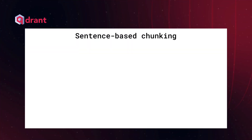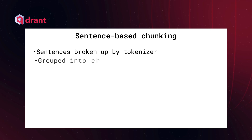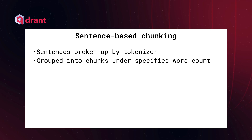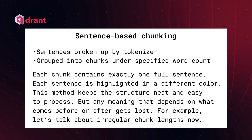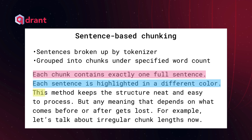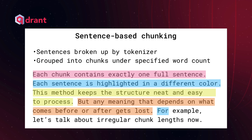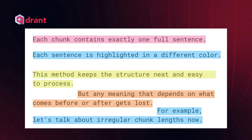Sentence-based chunking breaks the document into sentences using a tokenizer, which is trained to recognize punctuation patterns and sentence structure. Then you group these sentences into a chunk that stays under a specific word limit — let's say 150 words per chunk. Each chunk is more likely to capture a full thought, but because sentence sizes vary, you're also going to end up with irregular lengths for your chunks. This is the trade-off of this method.